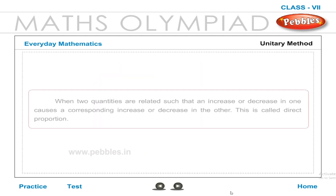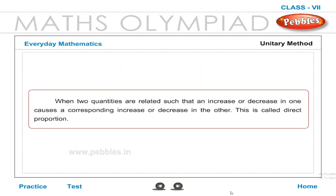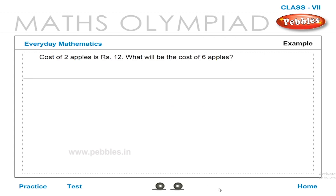Unitary Method: When two quantities are related such that an increase or decrease in one causes a corresponding increase or decrease in the other, this is called direct proportion. For example,